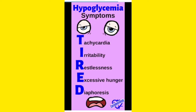E means excessive hunger and D means diaphoresis — diaphoresis means excessive sweating. So that is the end of this video.